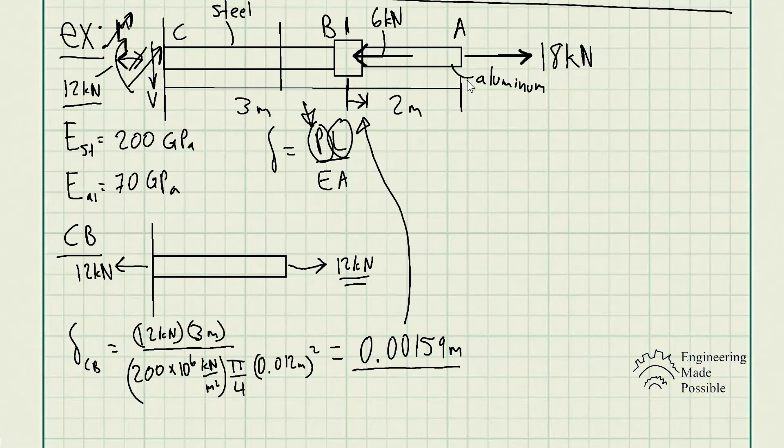Now we're also asked to solve for the deformation at the end at point A. So now this is where we go ahead and do the free body diagram of the member BA. In this case, it's the aluminum rod. So cutting out a section of the member BA at this point, I decided to draw the right side. So I have the 18 kilonewtons external load, and then from here, the internal load for static equilibrium has to be equal and opposite. So we also have 18 kilonewtons.